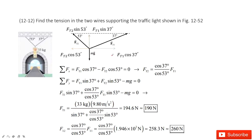In this one, you can see we have three forces: gravity, Ft1, and Ft2. For each one we have its angles. Now we can project Ft1 into two components — X component and Y component — and Ft2 into two components: Ft2 cosine 53 degrees and Ft2 sine 53 degrees.